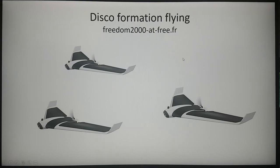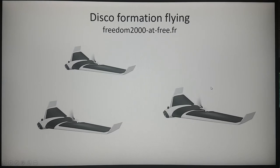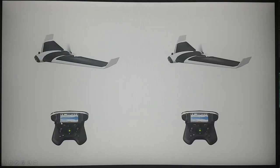Here is a small presentation of my project of Disco formation flying. The master Disco will be the one followed by the slaves, and you may expect to have many slaves following the same master. A very small formation flying will be done with only two Discos — a master and a slave.